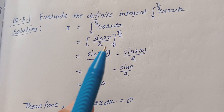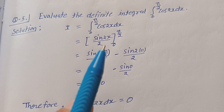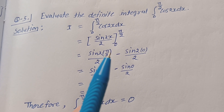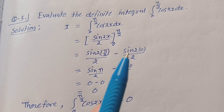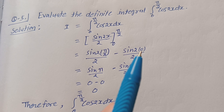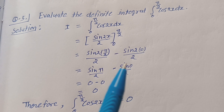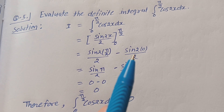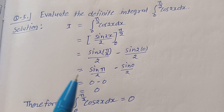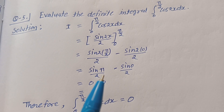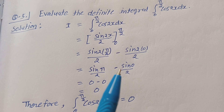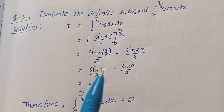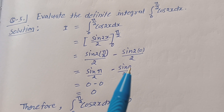Put the limits inside the bracket: upper limit minus lower limit. So this equals sin(2 × π/2)/2 minus sin(2 × 0)/2, which gives sin(π)/2 minus sin(0)/2, that is sin(π) divided by 2 minus sin(0) divided by 2.